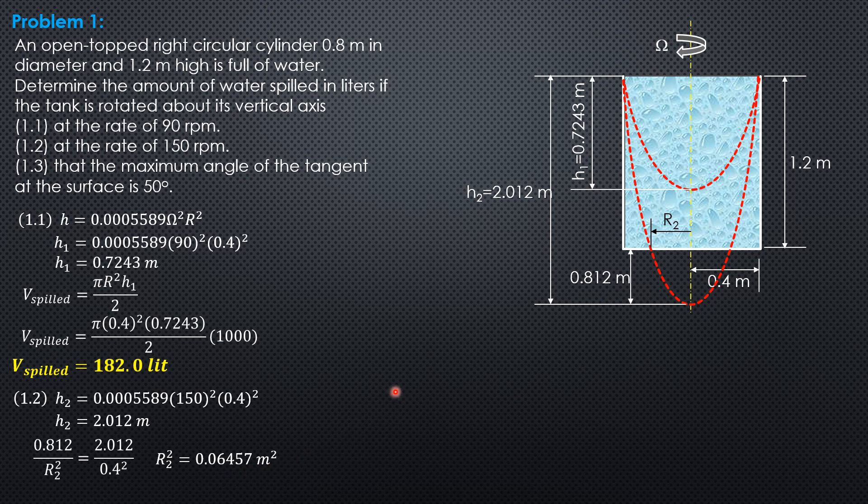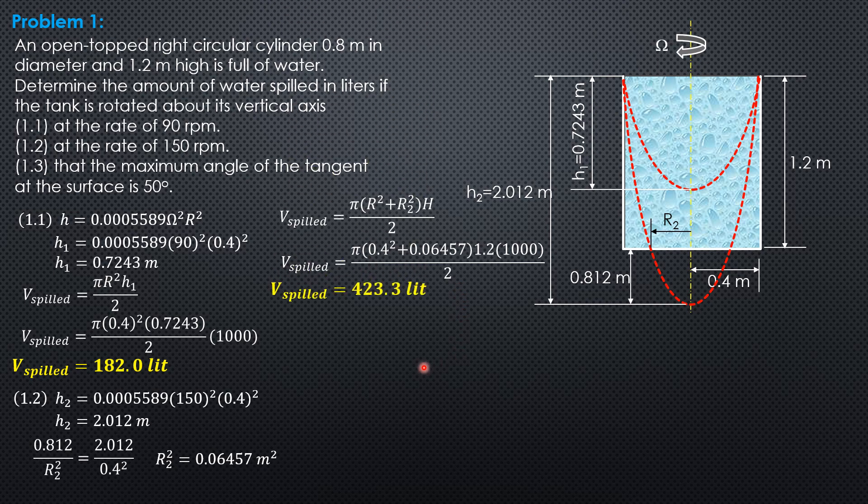So the volume spilled is equal to pi quantity R square, pi over 2 quantity R square plus R2 square times 1.2 or times big H. So pi over 2 quantity R square plus R2 square times big H. So that's the formula for volume of paraboloid of revolution with 2 bases. So substitute values pi over 2 times quantity 0.4 square plus 0.06457 times 1.2 which is big H times 1,000 to convert it to liters. So we'll get 423.3 liters. Then this is also equal to volume of big paraboloid minus volume of small paraboloid, this paraboloid here. And the answer is the same. Try to do that in your free time.